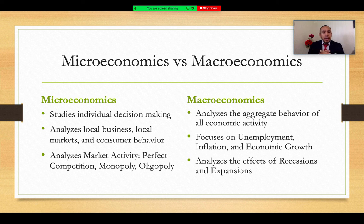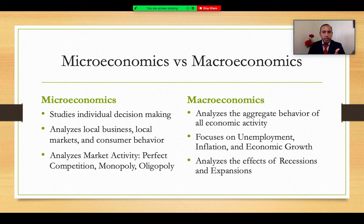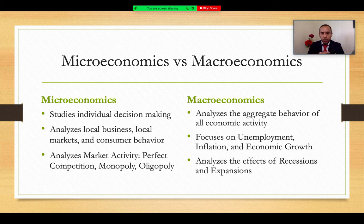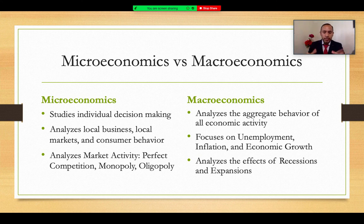Macroeconomics is broader. It analyzes the aggregate behavior of all economic activity across broader sectors of the economy. It focuses on things like the general level of unemployment, the inflation rate and stability of prices, economic growth and prosperity, and economic stability. It analyzes the effects of recessions and their long-term effects on society, as well as economic expansions and constraints. Both micro and macro are complementary — one focuses on local individual decision making, the other on the overall big picture.